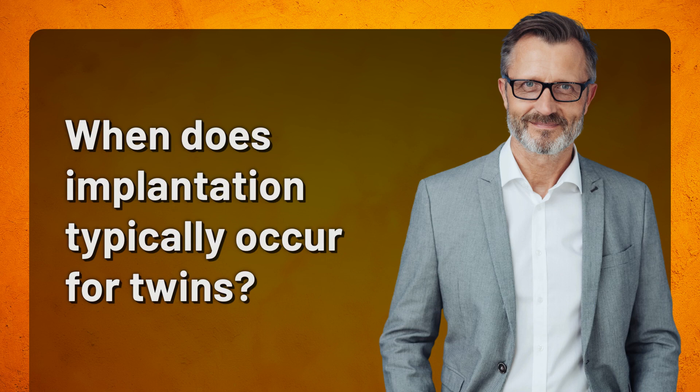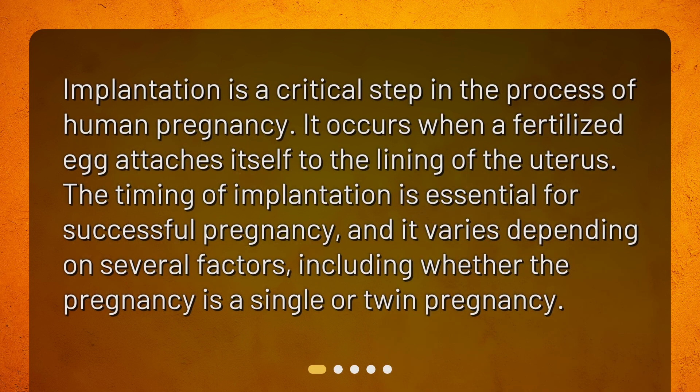When does implantation typically occur for twins? Implantation is a critical step in the process of human pregnancy. It occurs when a fertilized egg attaches itself to the lining of the uterus. The timing of implantation is essential for successful pregnancy, and it varies depending on several factors, including whether the pregnancy is a single or twin pregnancy.